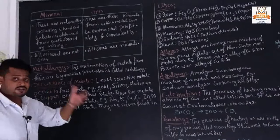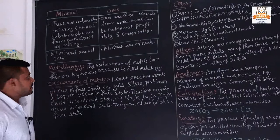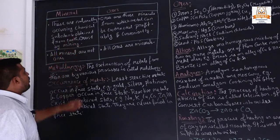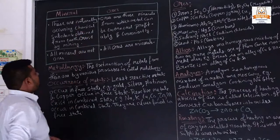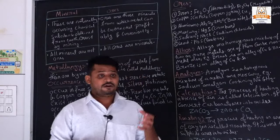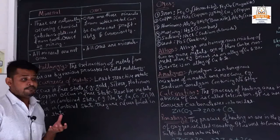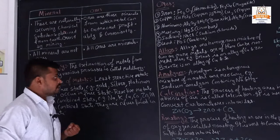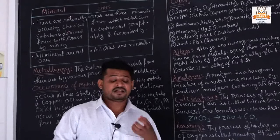What is the difference between minerals and ores? Minerals are naturally occurring chemical substances obtained from the earth's crust by mining. When we mine the field and soil, we get some precious rock and chemical substances — that is called a mineral. All minerals are not ores; not all minerals are found in the form of ores.